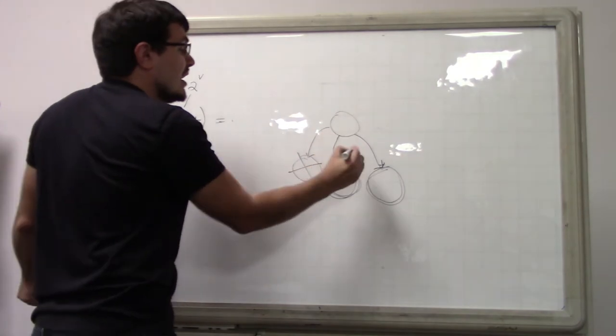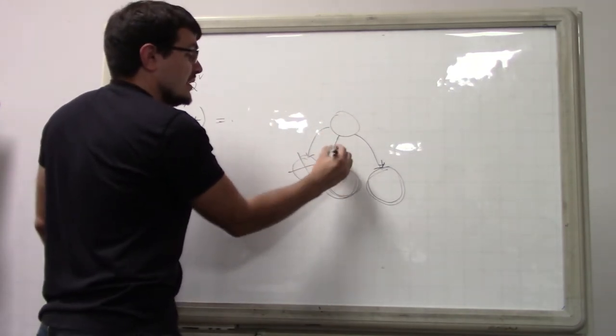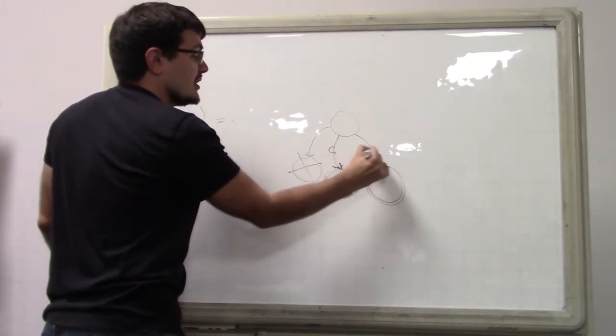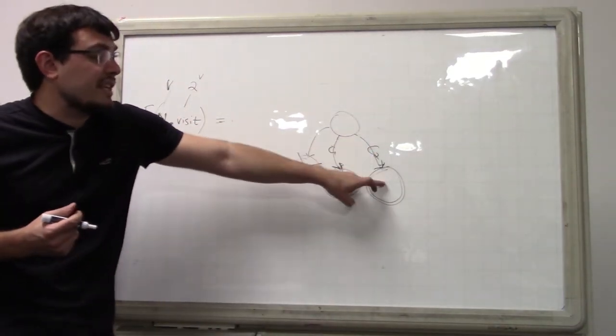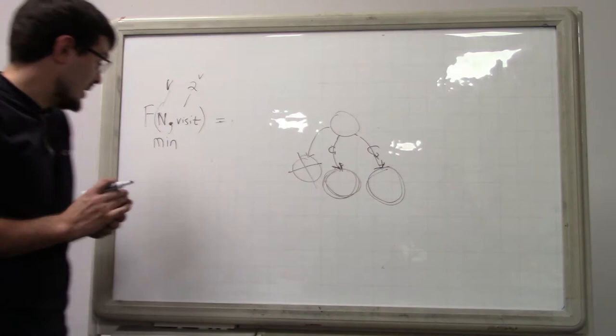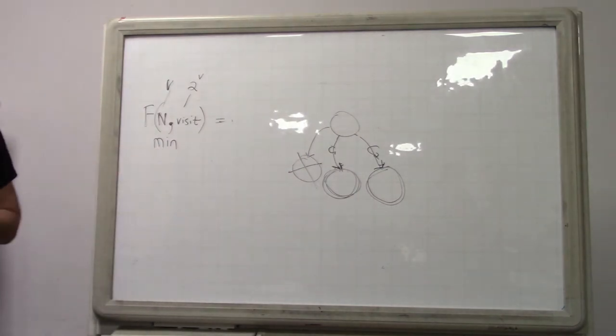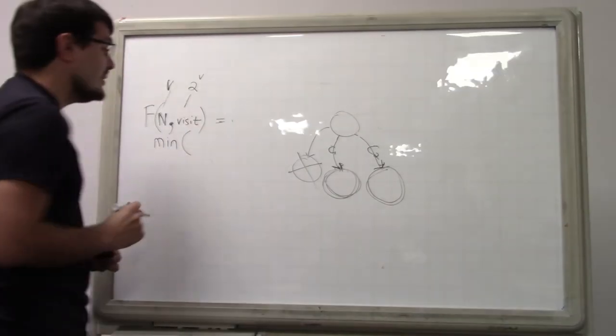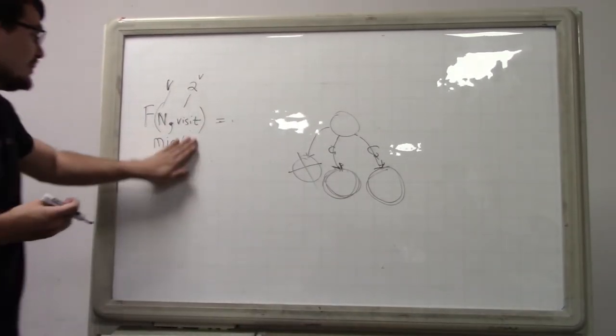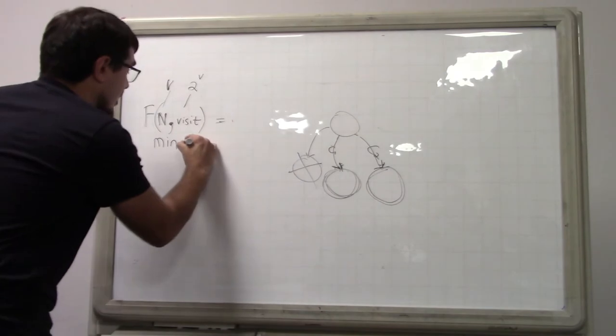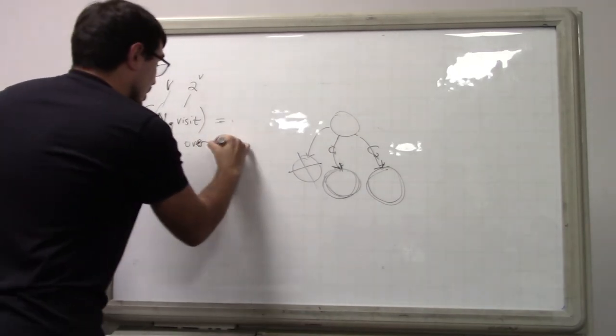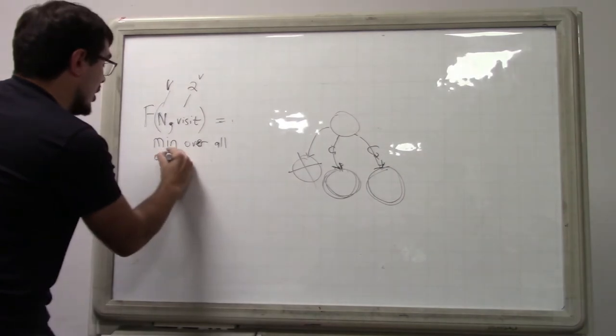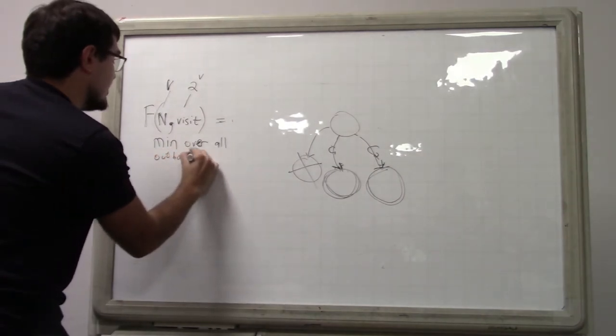We must pay whatever cost is on the edge. These are our two choices, and we basically take the best one out of them. So again, it will be a min, because we're looking for what is the best choice out of the choices that we have. So we will take a min. And what will the min be over? It will be min over... min over all outbound... It's kind of long.